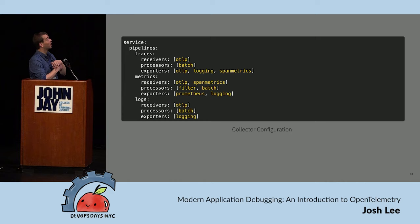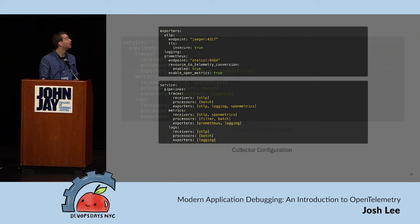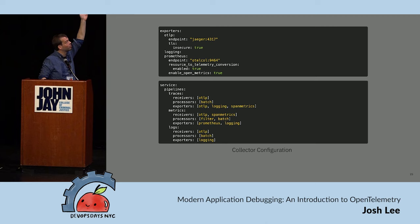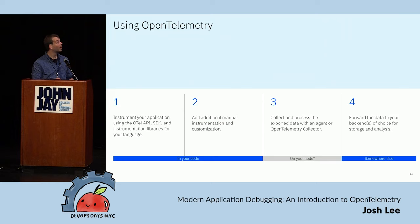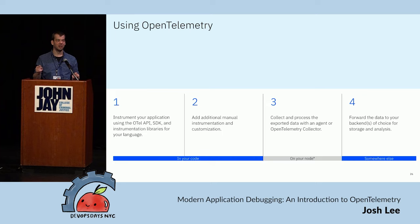This is the ops side: how you configure the collector. It's just YAML. For each signal type in the collector we define a pipeline, and the pipeline is just those receivers, processors, and exporters. Each one comes with a few configuration options — if it's an exporter, it's usually the endpoint and additional headers for authentication. That's it. It's really that easy. If you're not doing this already, just go implement distributed tracing — if you have a distributed system, you will immediately benefit.